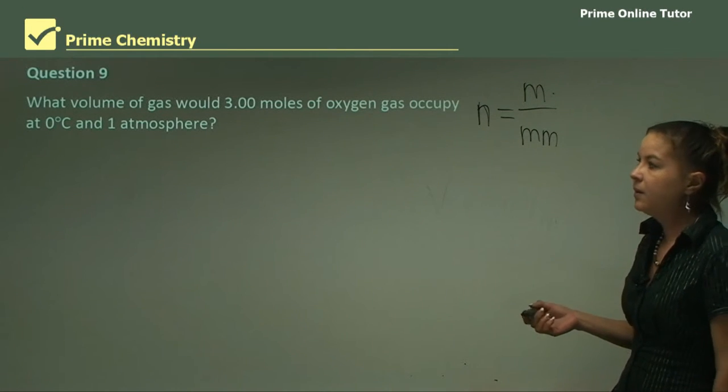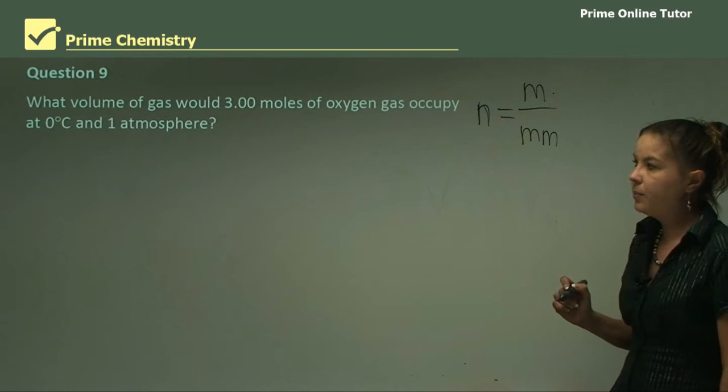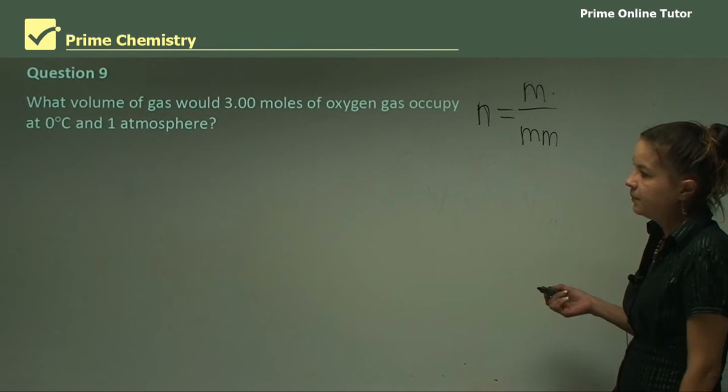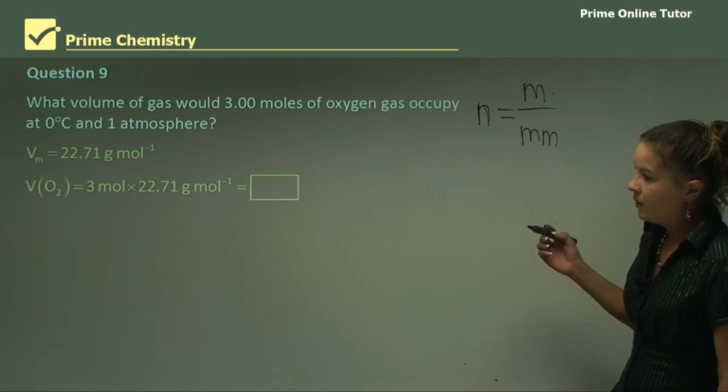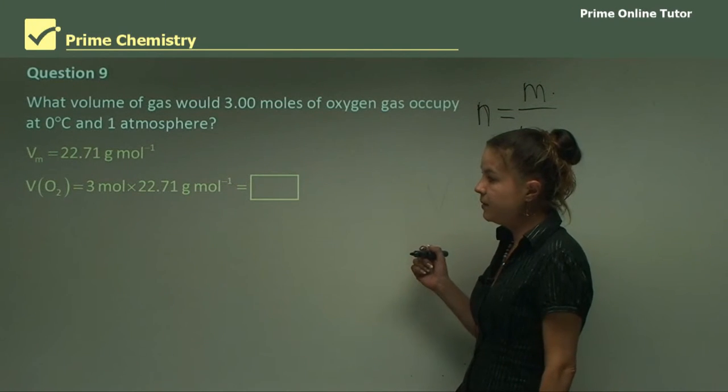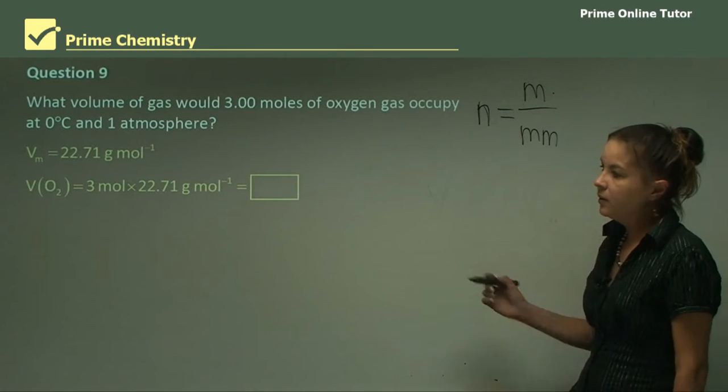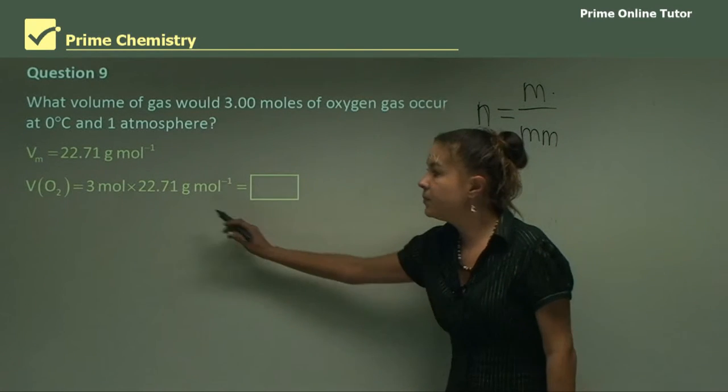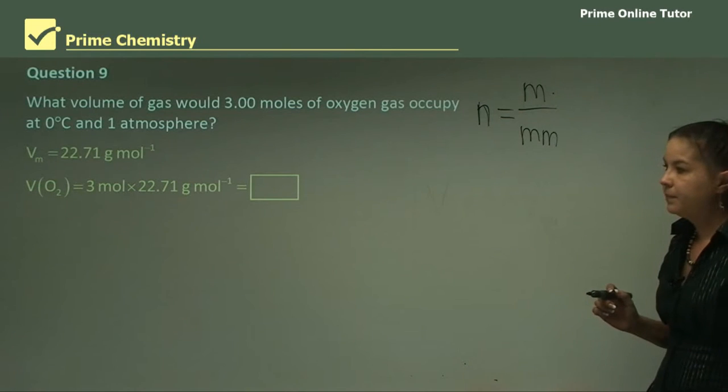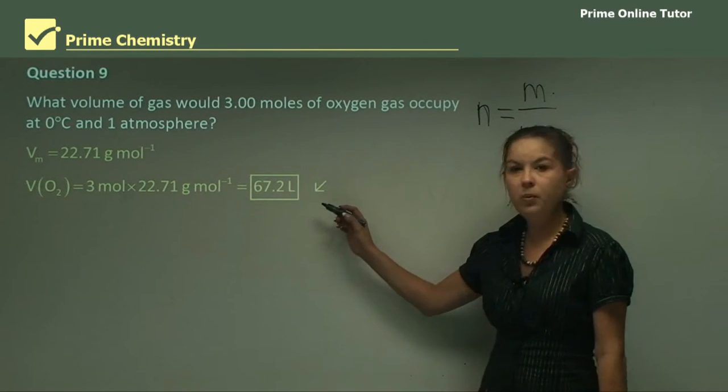Question nine. What volume of gas would 3 moles of oxygen gas occupy at 0 degrees? Now, the molar volume will be 22.71 at 0 degrees. And the volume of oxygen will be the moles times the molar volume. And what we find is that our answer will be 67.2 liters.